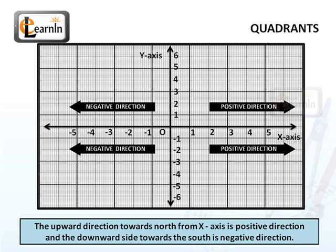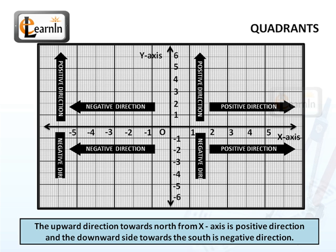The upward direction towards the north from the x-axis is the positive direction, and the downward side towards the south is the negative direction.